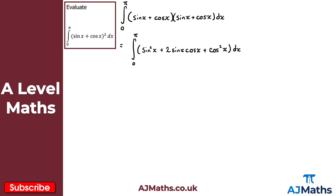In its current form it's a little tricky to integrate, so we use trig identities. We notice sin squared x plus cos squared x equals 1, so those two terms simplify to 1. Also, 2 sin x cos x is the double angle result for sine, giving sin 2x. So the integral becomes the integral from 0 to pi of 1 plus sin 2x with respect to x — much more straightforward.